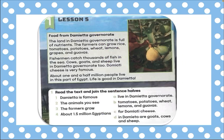Food from the Damietta governorate. We talk about Damietta. The Damietta governorate has fish and fishermen, people who make furniture, and farmers who grow fruits and vegetables. The land in Damietta is full of nutrients. The farmers can grow rice, tomatoes, potatoes, wheat, lemons, grapes, and guavas.